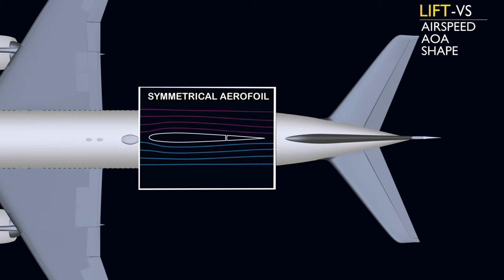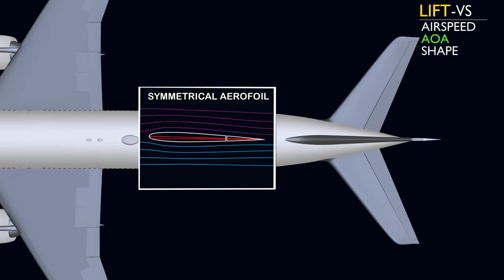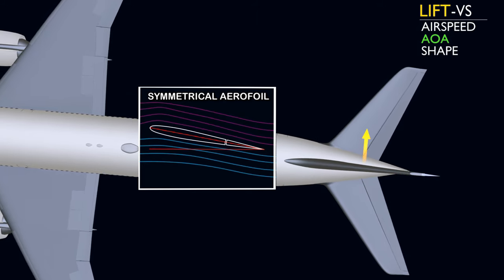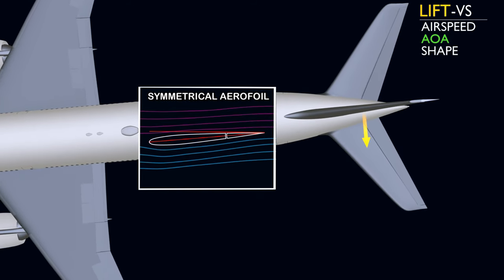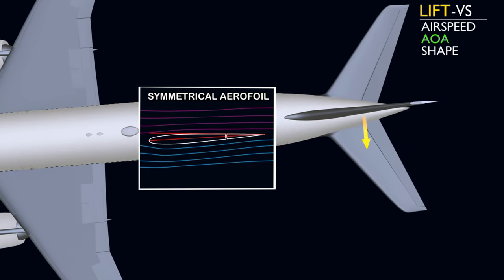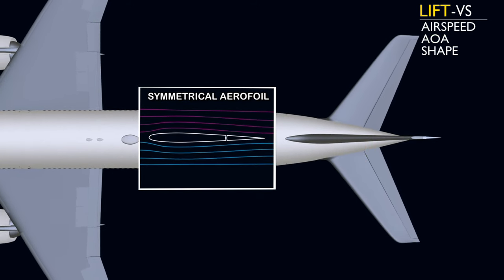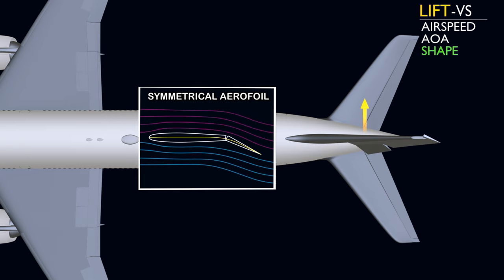Lift increases with an increase in airspeed. But the symmetrical aerofoil generates no lift when the angle of attack is zero. To generate lift, the airflow has to turn around the stabilizer, either due to a change in the angle of attack, or by changing the effective shape with the help of the rudder.